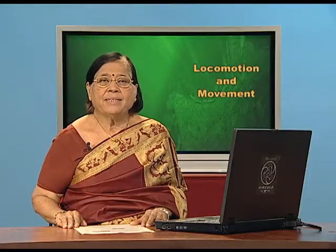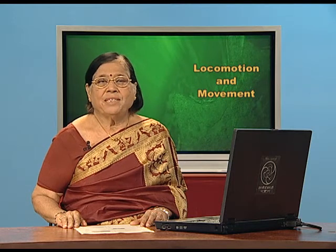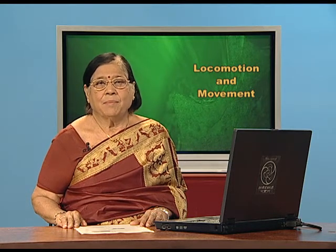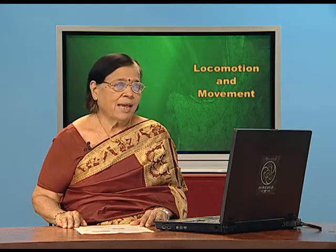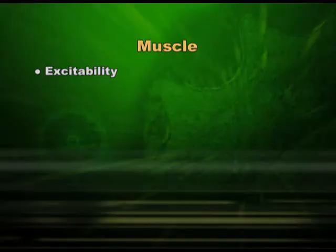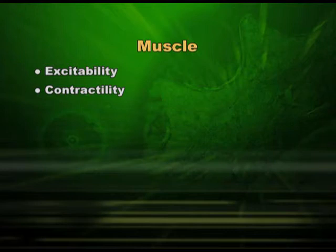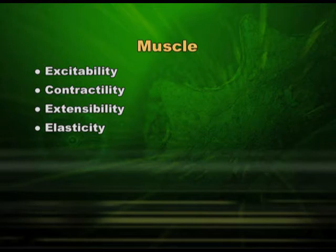Now we should try to understand the muscle. What features do we expect in a muscle? First, it should have excitability — whenever there is a stimulus, it should give a response. It should be able to contract and to relax, and it should have elasticity. It should not be very tough like bone; elasticity is a must for muscle. So in short, muscle should have excitability, contractility, extensibility, and elasticity.